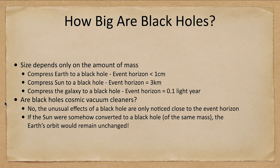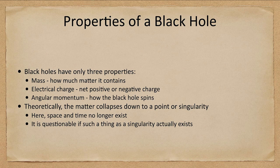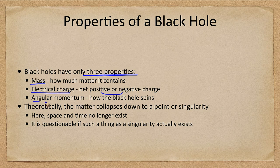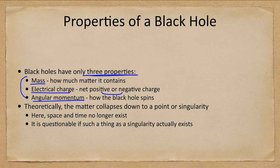So what properties does a black hole have? Black holes are relatively simple compared to other objects we've studied — they have just three properties: mass, electrical charge, and angular momentum or spin. That's it. No composition or anything else. A black hole could be made up of hydrogen, iron, or peanut butter — it doesn't matter. All of that identity gets crushed out of existence in forming the black hole, and the only properties that remain are these three.